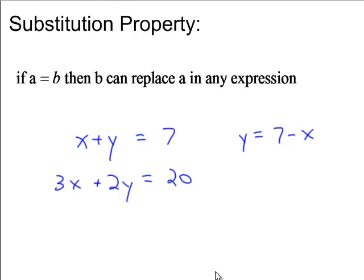Substitution property. If A equals B, B can replace A in any expression. So if we start out with x plus y is equal to 7, you solve for one of the variables. In this case, I solved for y. So wherever there's a y, you can put 7 minus x. So here we've got 3x plus 2 times, in parentheses, 7 minus x is equal to 20, and then you finish up the problem. Remember, you put parentheses around it because you're going to have to distribute the 2.